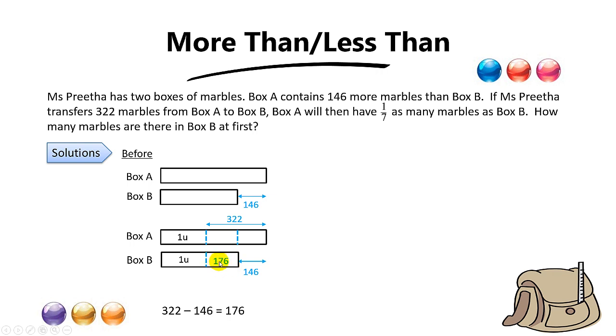And why is this important? Because when you draw the after model, it looks something like this. Box A has one over seven as many marbles as Box B. It means that the leftover for Box A is one unit while Box B will have seven units. Box A is one over seven, meaning A has one unit while B has seven units.